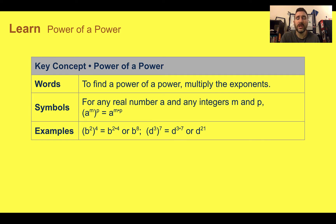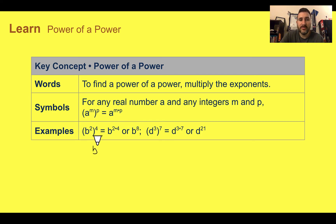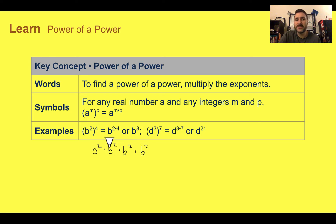Let's learn: power of a power. If you have a power raised to another power, you are going to multiply the exponents. So if we have a to the m raised to the p outside the parentheses, then we multiply m times p. In the previous rule we added exponents; here, when raising a power to another power, we multiply. B to the second raised to the fourth power is b to the two times four, which is b to the eighth. That means you had b to the second four times; writing it out and adding exponents still gives b to the eighth — the faster way is to multiply.